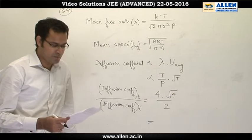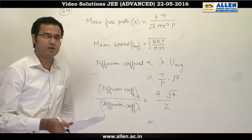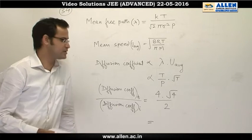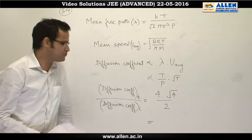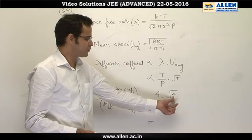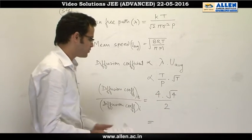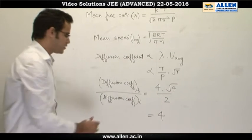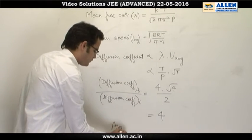In the given question, temperature is 4 times, pressure is 2 times, and we need to find out by which factor the diffusion coefficient will change. If we put the values accordingly, temperature 4 times, temperature 4 times, pressure 2 times, if we solve this factor, the factor is 4. So finally, the answer will be 4.